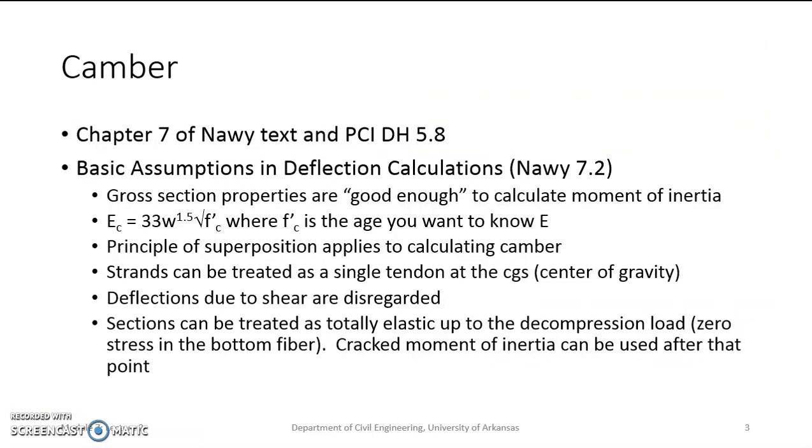Here are the six basic assumptions from the NAWI textbook. When we calculate camber, we assume that the moment of inertia for the gross section properties are good enough. We don't have to use transform section properties, but if we want to get a little more accurate, we can use transform section properties. The modulus of elasticity is based on the concrete strength. We can use superposition that applies to all the deflections. So that means we can calculate deflection due to live load, deflection due to the dead load, to the sustained loads. Add all those up, and that's what our ultimate camber or deflection may be.